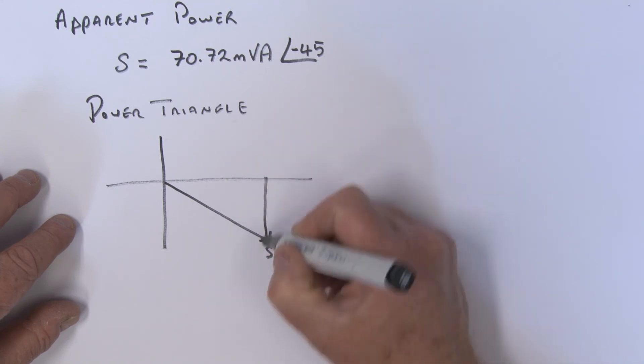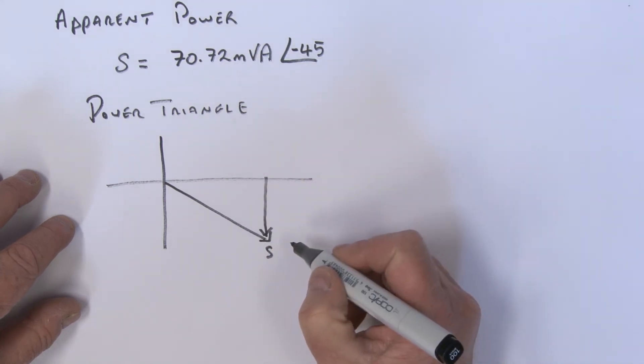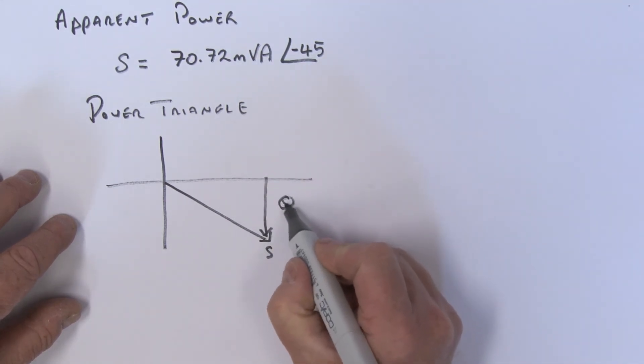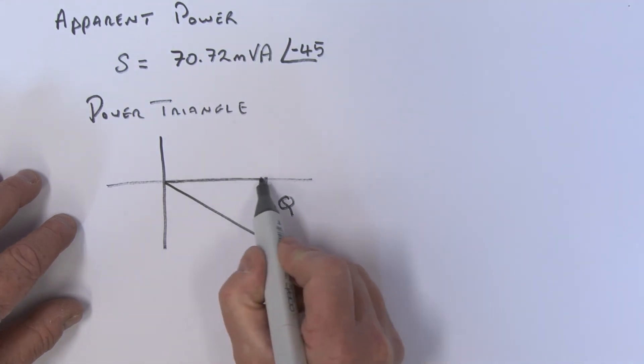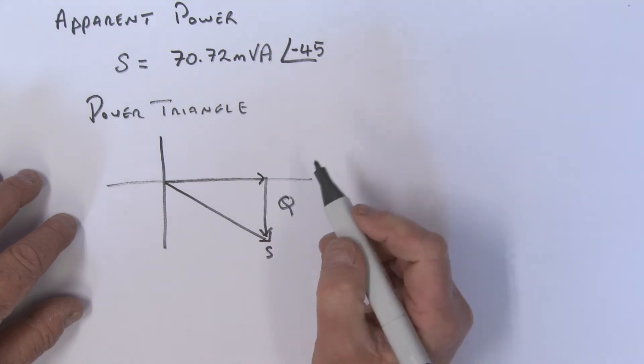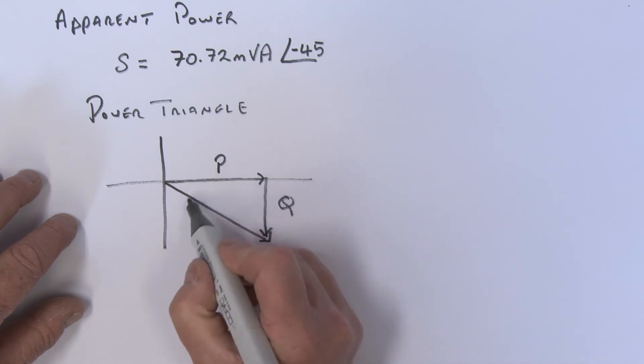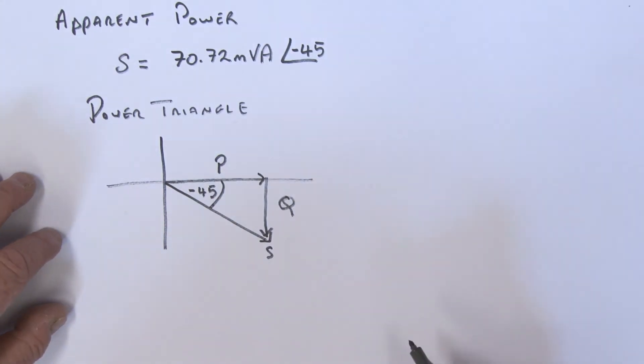Well, it looks like this. We have the apparent power, looking like this, so this is S. This value here represents the reactive power, which we use the symbol Q, and this value over here, well that represents the real power, the true power, so we'll call that P.